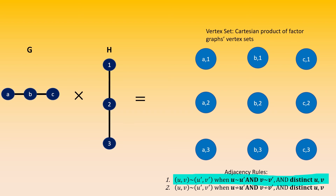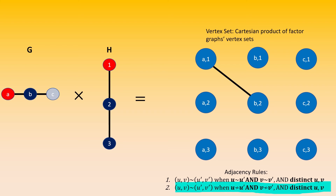According to the first rule, vertex A1 will connect to any vertex with both distinct left entry adjacent to vertex A in graph G, and distinct right entry adjacent to vertex 1 in graph H. In this case, there is only a single vertex adjacent to A in graph G — that would be vertex B — and there is only a single vertex adjacent to vertex 1 in graph H — that would be vertex 2. Therefore, vertex A1 is adjacent to vertex B2. According to the second adjacency rule, vertex A1 is adjacent to any vertex with both distinct left entry not adjacent to vertex A, and distinct right entry not adjacent to vertex 1. Vertex C is not adjacent to vertex A, and vertex 3 is not adjacent to vertex 1. Therefore, vertex A1 is adjacent to vertex C3. These are all of the adjacencies for A1.